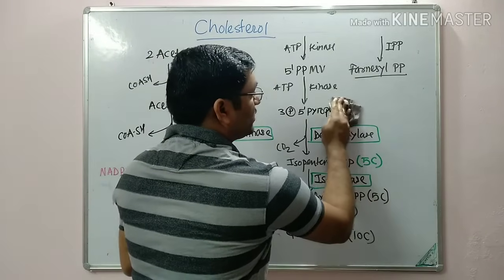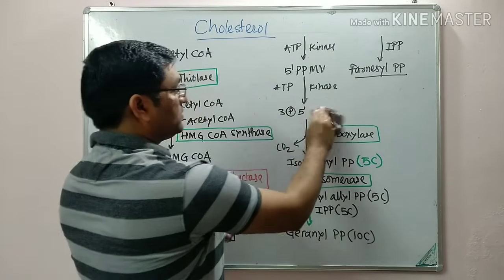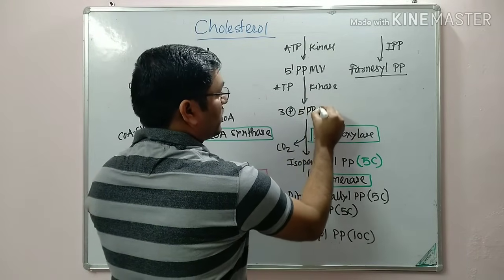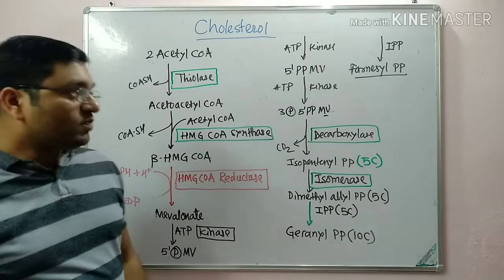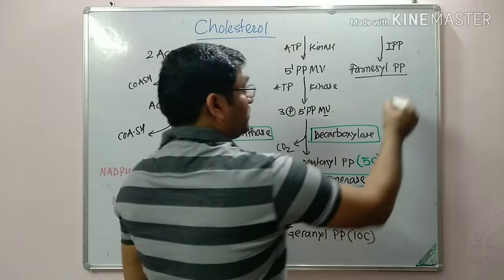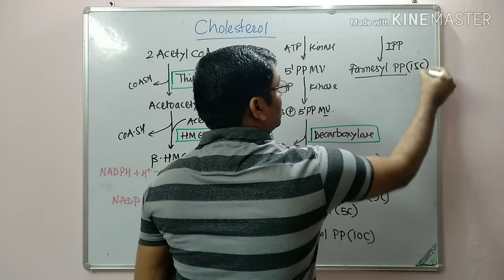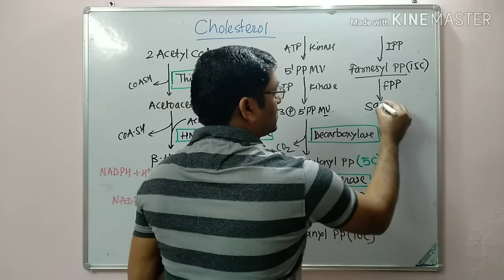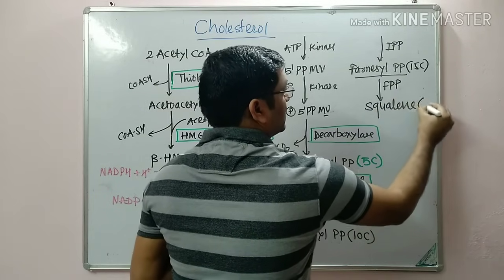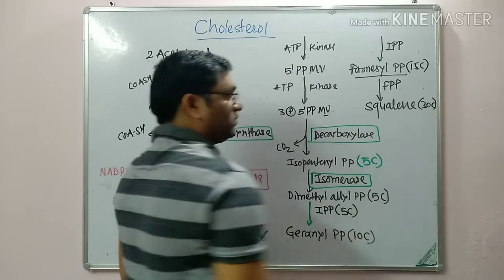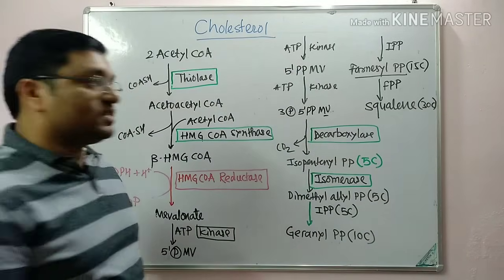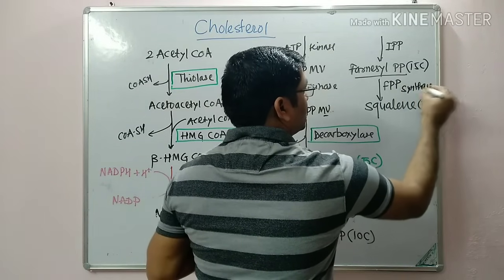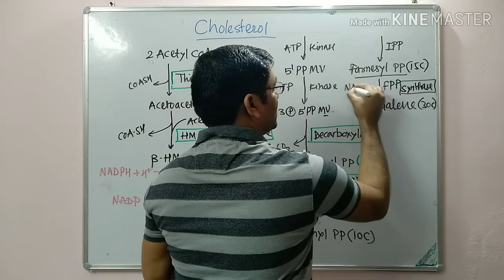This farnesyl pyrophosphate, which is a 15-carbon compound, condenses with another molecule of farnesyl pyrophosphate to give squalene, a 30-carbon compound. This is with the help of the enzyme squalene synthase, and in this reaction NADPH is required.